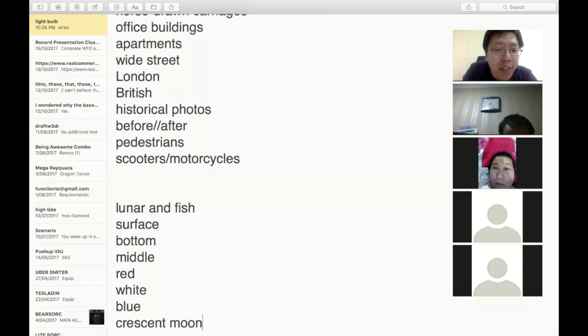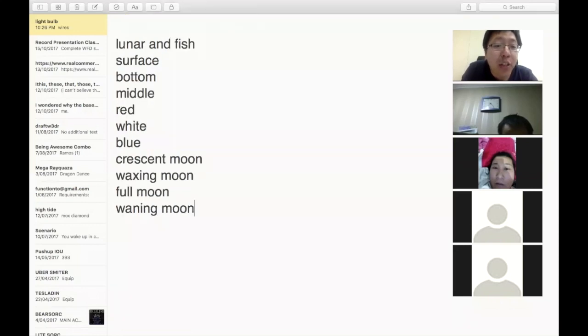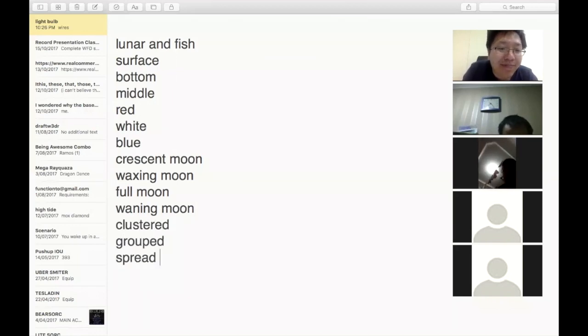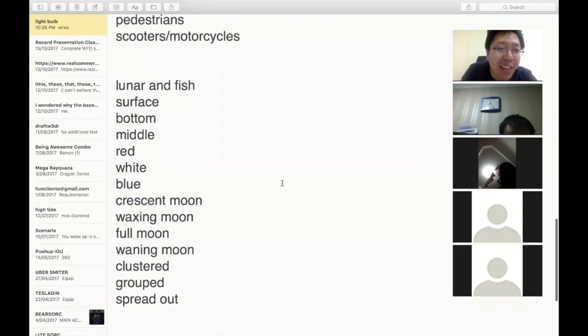You've got crescent moon, that's the small one, waxing moon, full moon, waning moon. You can talk about the fish. You can say clustered, grouped, or spread out. That should be more than enough keywords to cover this entire image.